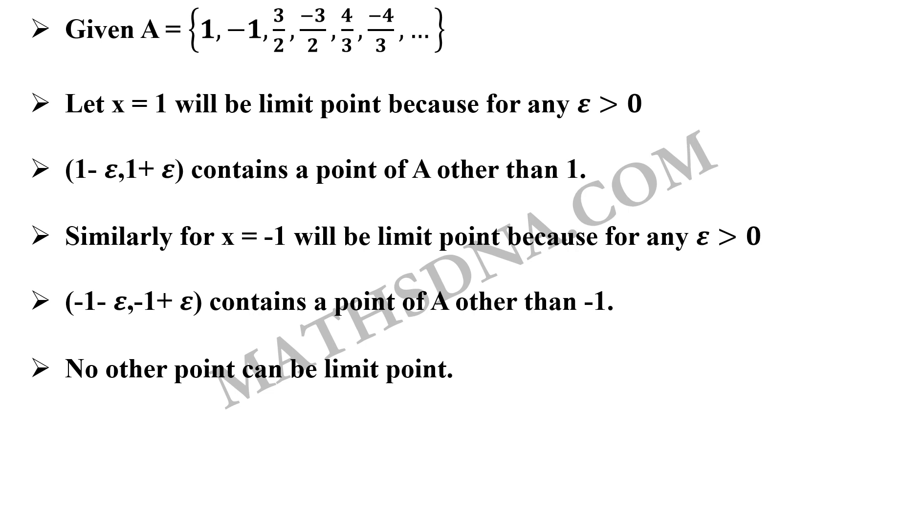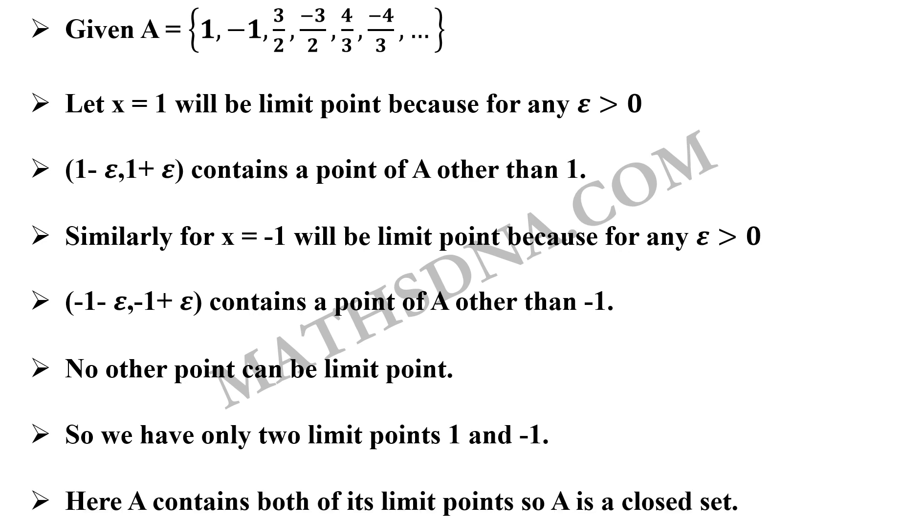Now comes the point 3/2 that will not be able to become a limit point because if you take (3/2 - epsilon, 3/2 + epsilon), it will not contain any point of the set because you can take some small epsilon that it will not be having any other point of A. So, no other point can be a limit point. For better understanding, you can draw a line and then plot the points on them. The limit points of the set are only 1 and -1 and both the points are contained in the set. So, the set is a closed set.